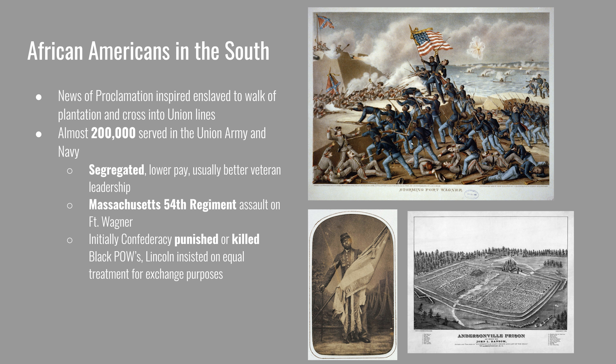Initially, the Confederacy tortured or killed Black prisoners of war, but Abraham Lincoln insisted on equal treatment for exchange purposes. The Confederacy changed their practices because Lincoln said that if the Confederacy killed American prisoners of war — Black or white — the United States would do the same. The largest Confederate prisoner of war camp, Andersonville Prison in Georgia, had very bad conditions with a lack of food and provisions. Despite eventually receiving equal treatment, in the end they all experienced hardship.